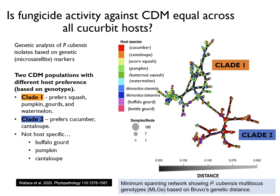Based on recovery, these two clades appear to have different host preferences. For example, isolates in clade one were mostly recovered from squash, pumpkin, gourds, and watermelon, while those in clade two were mostly recovered from cucumber and cantaloupe. However, these clades are not host-specific, since isolates of both clades were recovered from some hosts. For example, in cantaloupe, isolates were mostly found in clade two but also could be found in clade one. In buffalo gourd, isolates were recovered in both clade one and clade two.